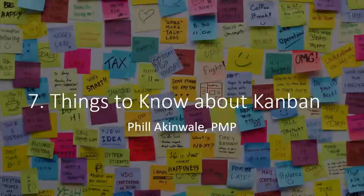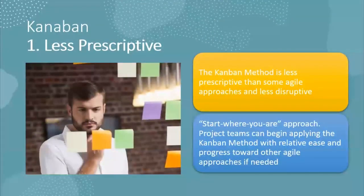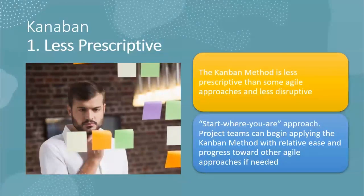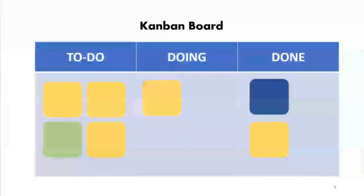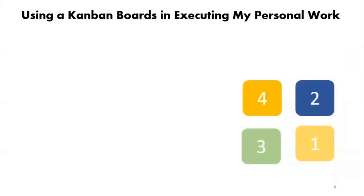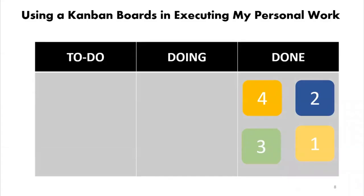Hello and welcome to seven things to know about Kanban. Number one: Kanban is less prescriptive than other Agile approaches — it is also less disruptive. Project teams can begin applying the Kanban method with relative ease and progress toward other Agile approaches if needed. It's incredibly flexible. Kanban is centered around the Kanban board. Here's a simple version: it has items we plan to do, items we are currently doing, and items that are done. I use a Kanban board for my personal work — I used it to write 12 books. It gives you a visual reminder of what needs to be done and encourages you to move along.